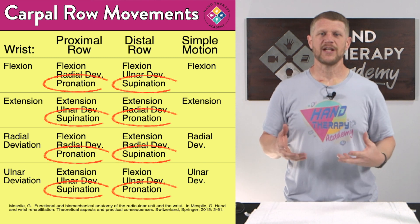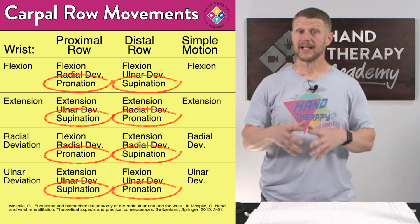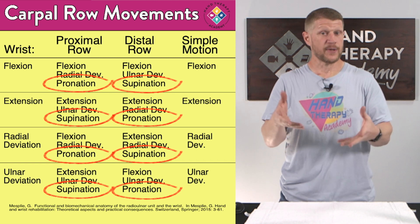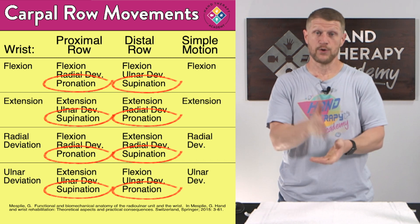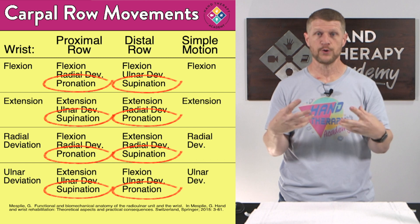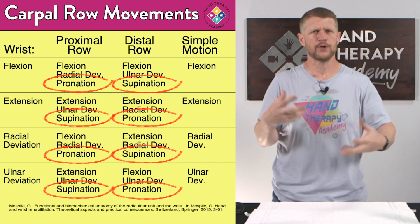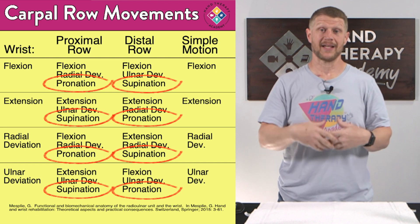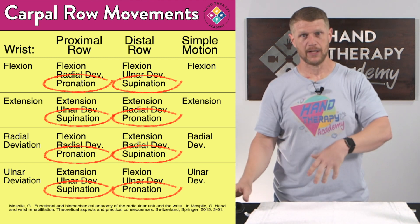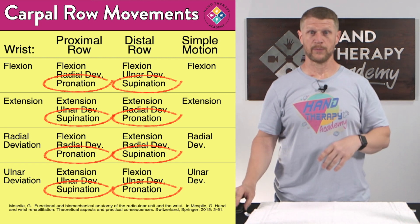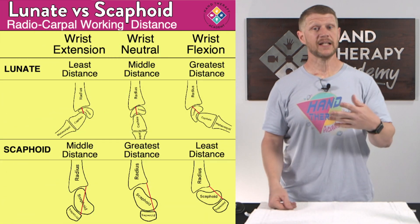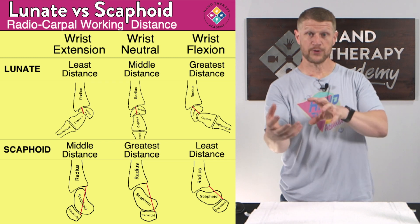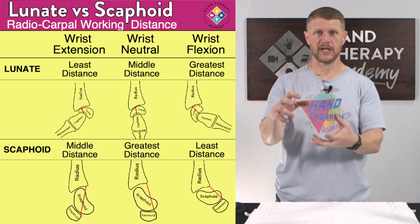There's also this pronation-supination component — a complex movement to figure out. You can memorize it, but it helps to understand it at a base conceptual level. Let's look at why the proximal and distal rows have supination and pronation. The proximal row is primarily a spacer — it maintains uniform space between the distal end of the radius and the distal row.